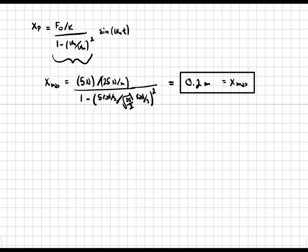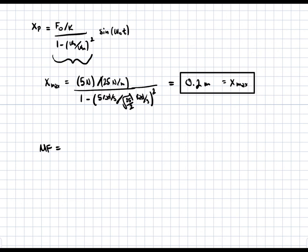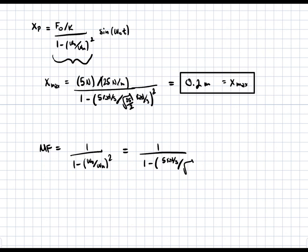Next, we're asked to find the magnification factor. The magnification factor Mf is going to be equal to 1 over 1 minus (ω₀/ωn)². Plugging everything in, we get 1 over 1 minus 5 radians per second divided by the square root of 25 over 2 radians per second, all squared. When we solve for this, we get negative 1, and this is a unitless parameter — there are no units to the magnification factor. This is the second part of our solution.